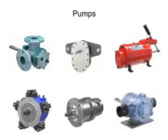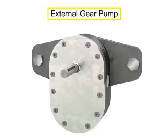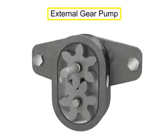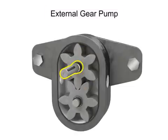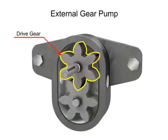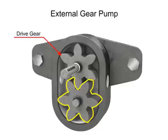Many different types of pumps exist to assist fluid movement in a variety of systems. An external gear pump uses two gears rotating against each other to provide fluid movement. One gear is driven by a motor connected to a shaft. This is called the drive gear, because it is driven by a motor, and it in turn meshes with and drives the movement of the second gear.